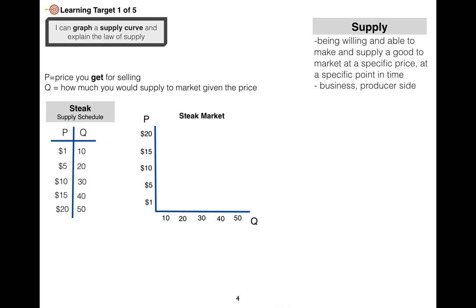Take these points and we plot them on a graph — price on the y-axis, quantity on the x-axis. We have a point at $1 and quantity 10, a point at $5 and 20, a point at $10 and 30, a point at $15 and 40, and a point at $20 and 50. We connect the points and here is our supply curve, labeled S. Labeling is very important.